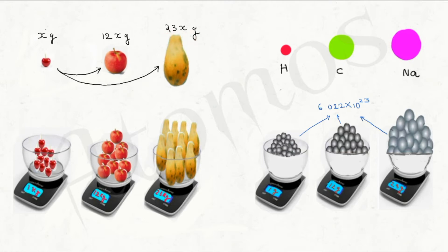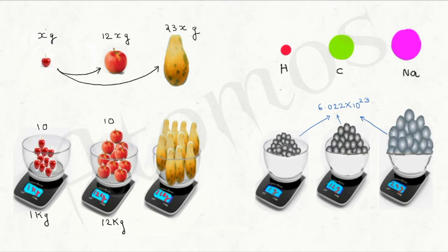Now, if I take 1 kg of cherry, it contains 10 cherry fruits. Since one apple is 12 times heavier than a cherry, I take 12 kg of apples — that basket also contains 10 apples. A papaya is 23 times heavier than a cherry, so I take 23 kg of papayas — that also contains 10 papayas. The weight of the fruits is different, but the number is found to be the same.